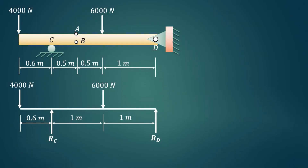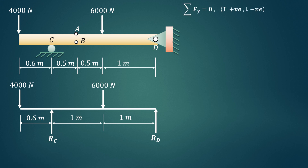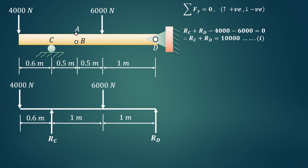First we'll find out the reactions at the supports. The vertical reaction at point C is RC and the vertical reaction at point D is RD. The total distance is 0.5 plus 0.5, that is 1 meter. Applying the first condition of equilibrium, summation of forces in the y-direction equals zero. Upward forces are positive and downward forces are negative. So RC plus RD minus 4000 minus 6000 equals zero, giving RC plus RD equals 10000.